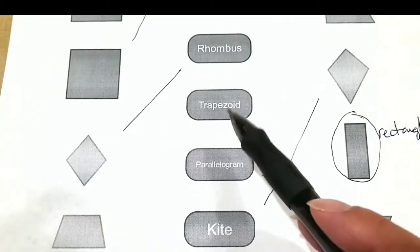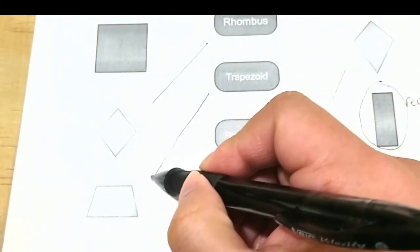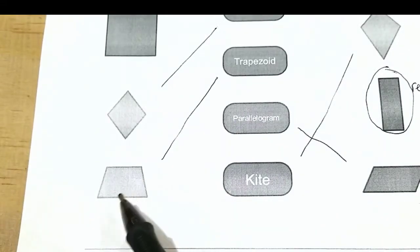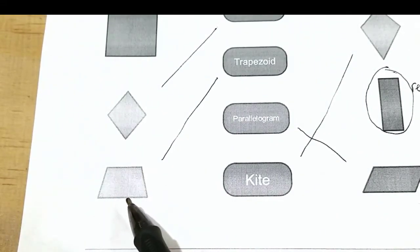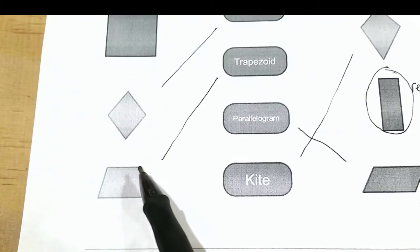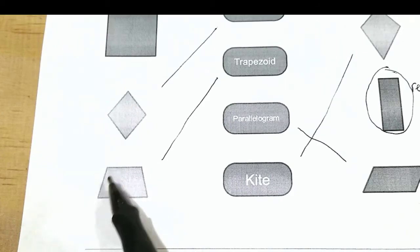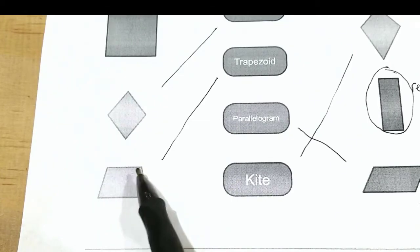And lastly we have the trapezoid. So the trapezoid, the bottom and the top are parallel to each other, but they don't necessarily have to be the same length. They just happen to be in the same direction, whereas the ones on the side, one is pointing in this direction and one is pointing in this direction. So a trapezoid is where they have two sides that are parallel and then the sides are pointing in different directions.